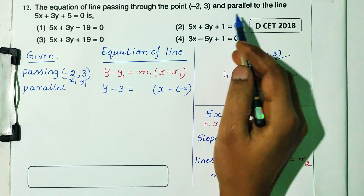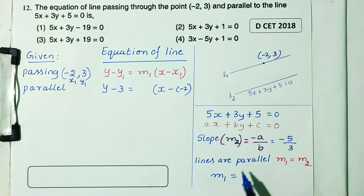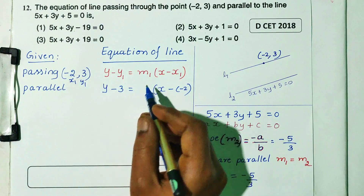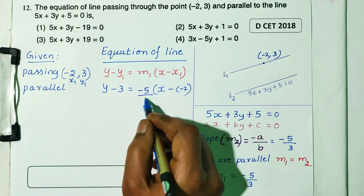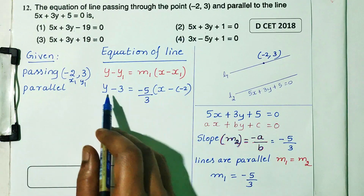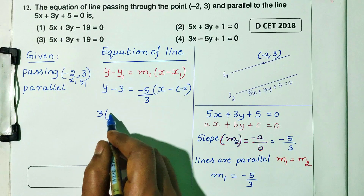Since the lines are parallel, m1 equals m2. So m1 equals minus 5 divided by 3. Now we substitute this slope into the line equation.